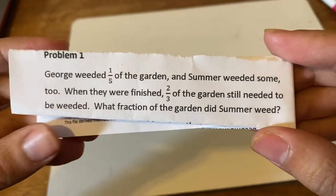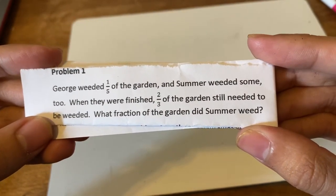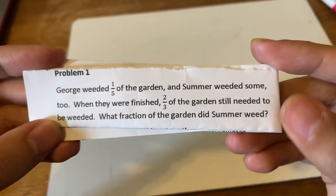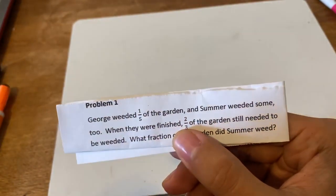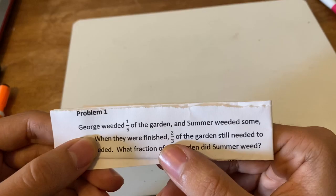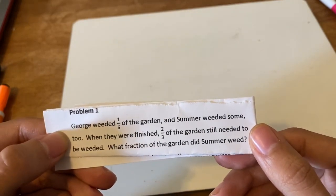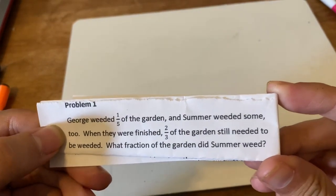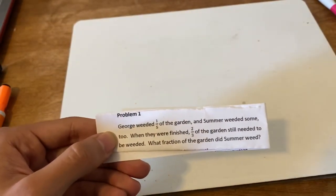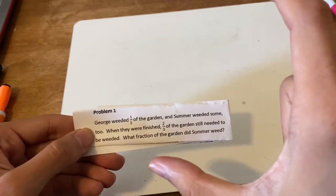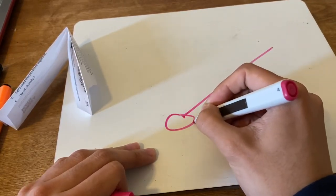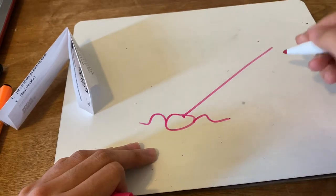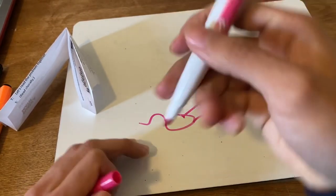Go ahead and pause the video and copy this problem down. I'm going to read it aloud: George weeded one-fifth of the garden and Summer weeded some too. When they were finished, two-thirds of the garden still needed to be weeded. What fraction of the garden did Summer weed? A weed-whacker is kind of like a stick with a ball on a string that spins fast and cuts the grass — that's what it means to weed.